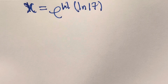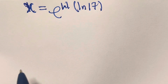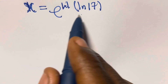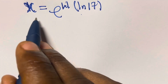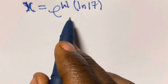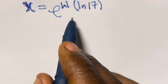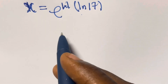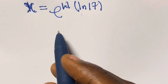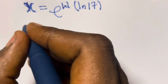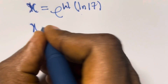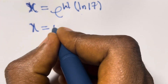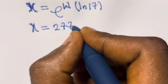Now we need to find the numerical value of x. We have to use a calculator or table to calculate x. You can use your calculator to calculate it, and I have done this before. If you use a calculator, you are going to get x to be 2.777...